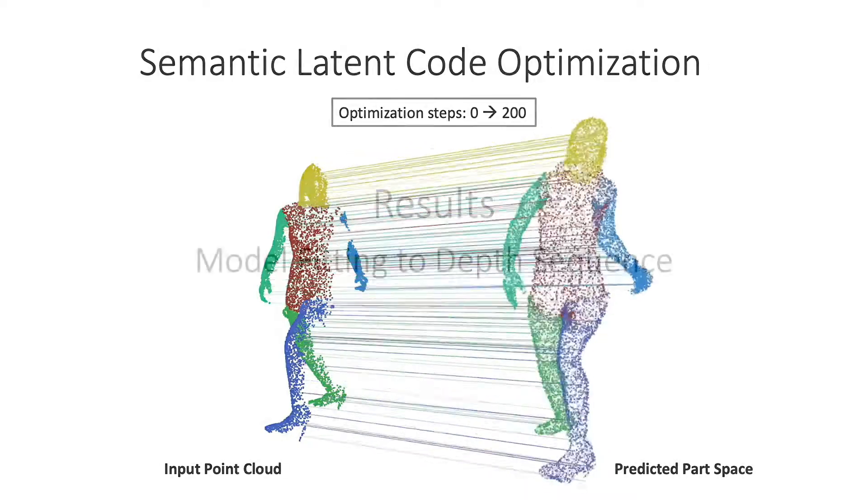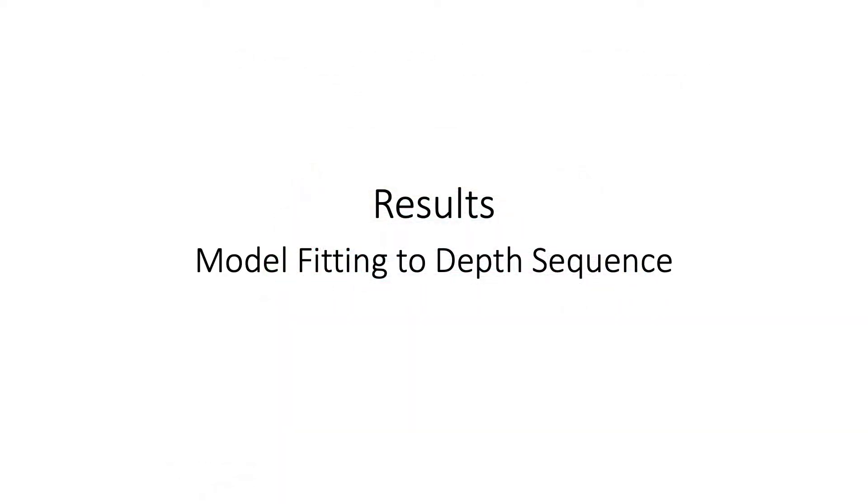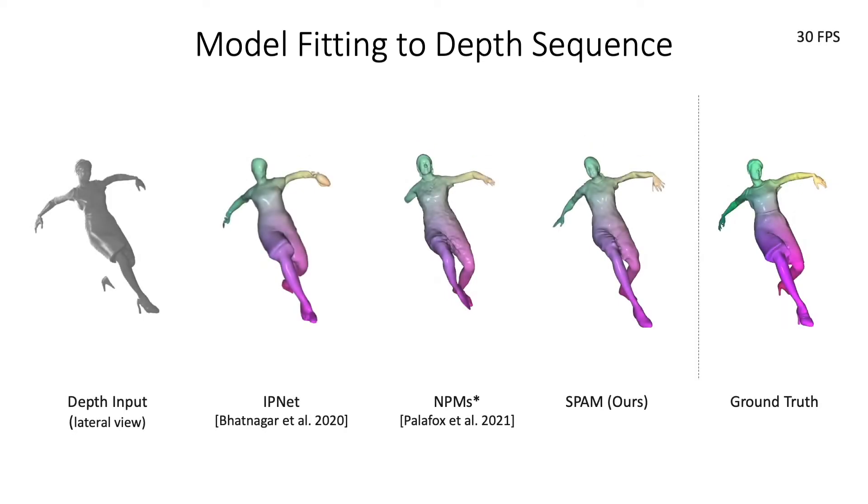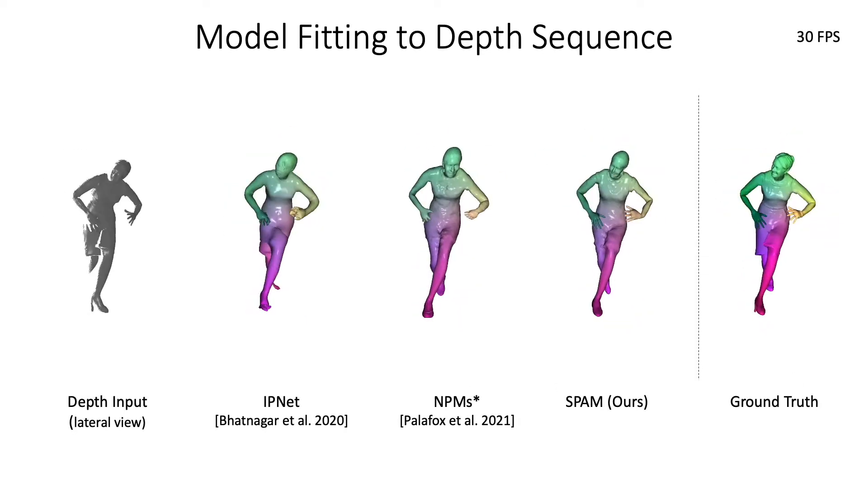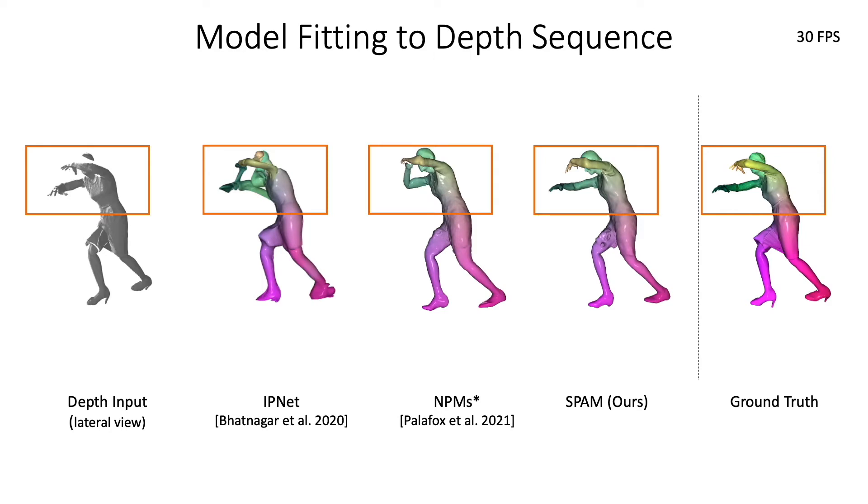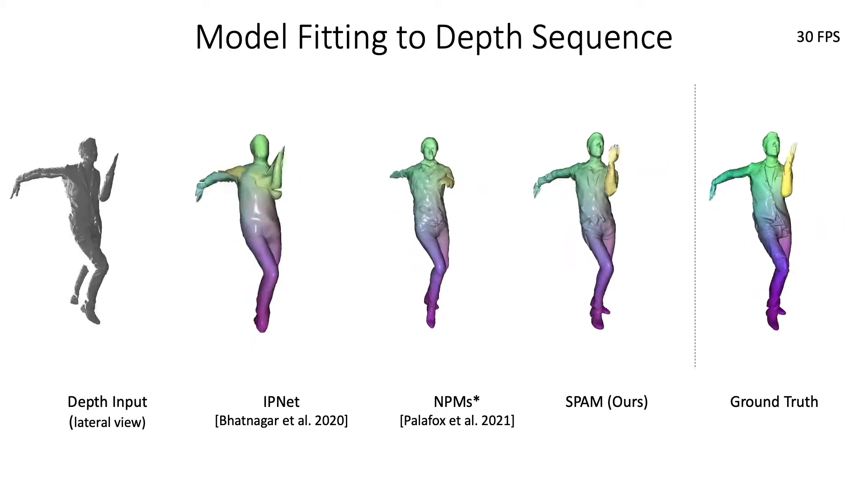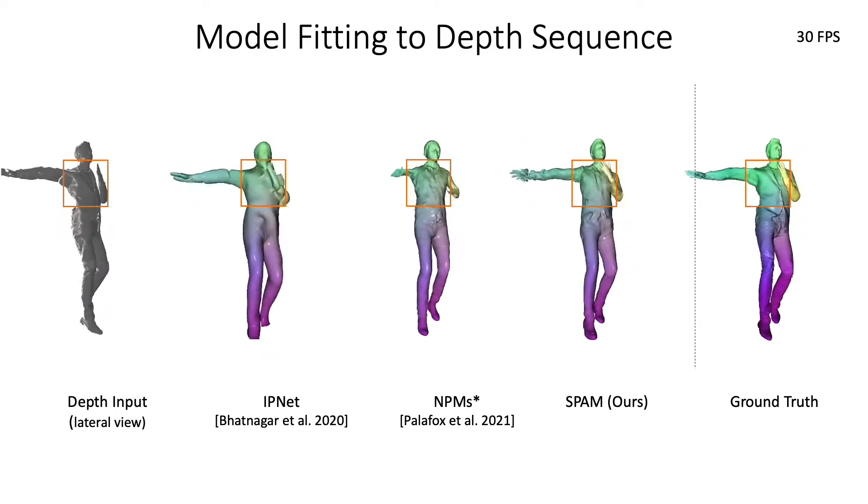In the following, we show qualitative results and baseline comparisons. We compare with IPNet and NPMs on the task of model fitting to depth sequences featuring very fast and complex motions. Note that we can retain high-frequency details, such as the jacket lapels.